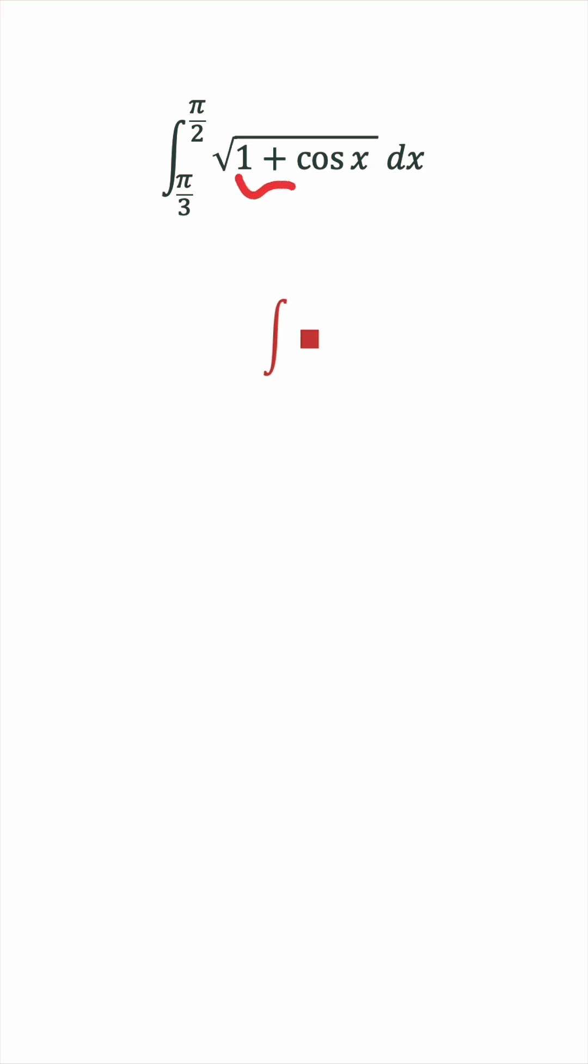Here we have 1 plus cosine x inside the square root. Can we rewrite this as something squared?